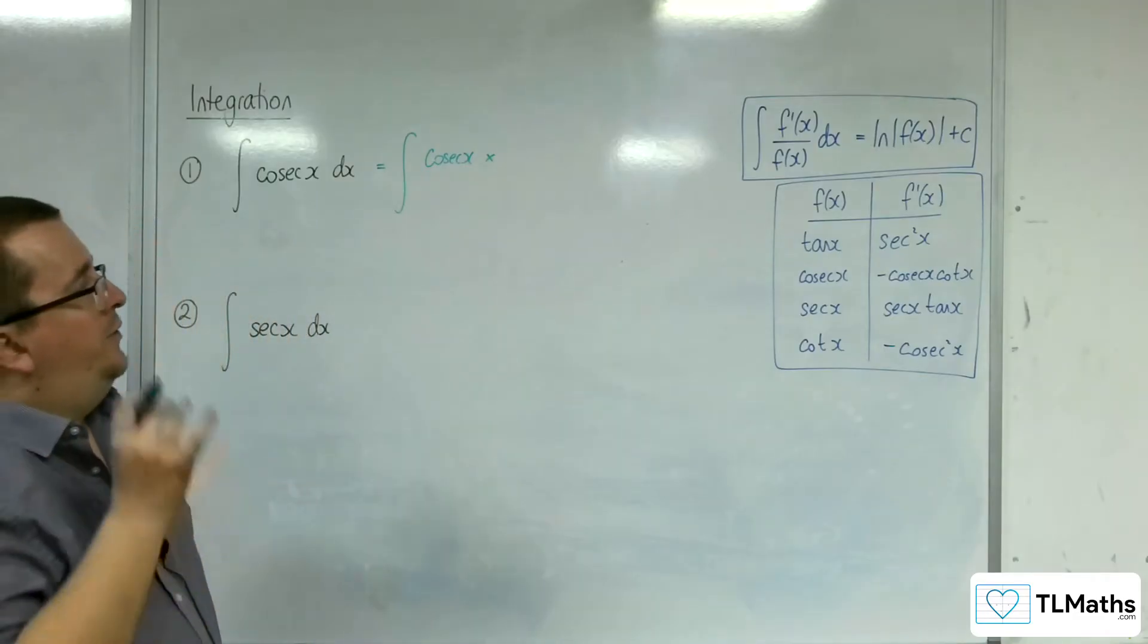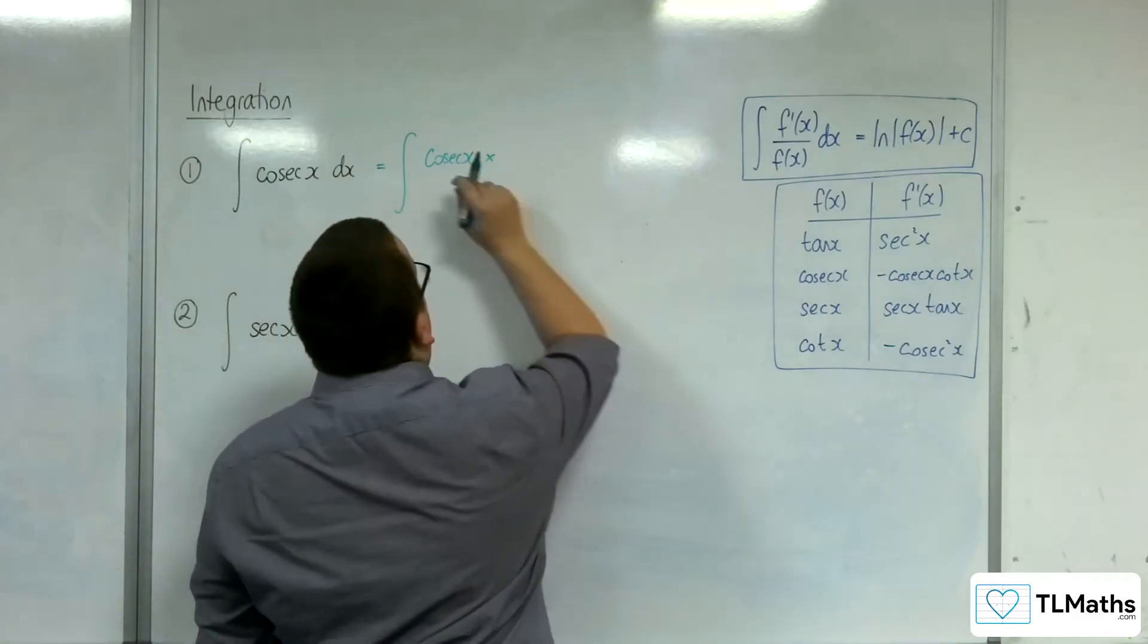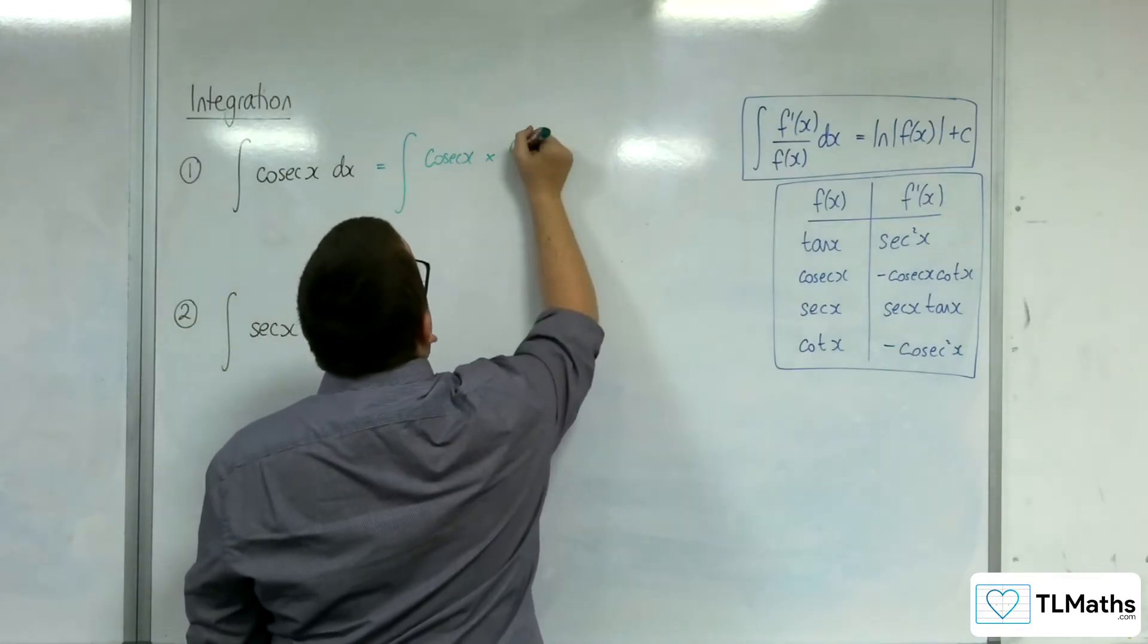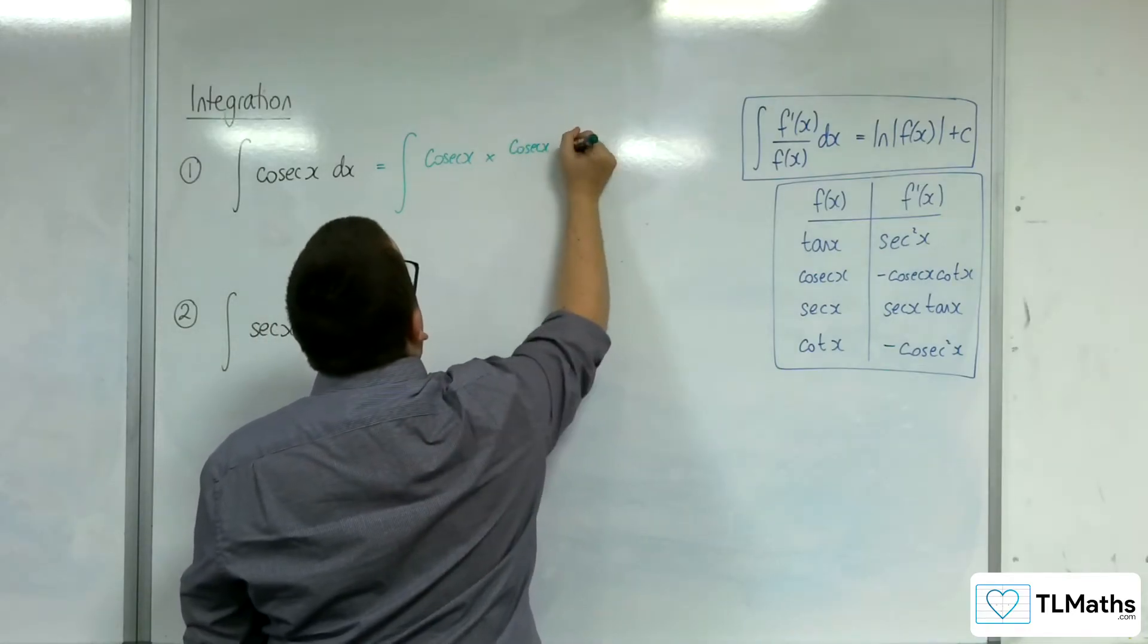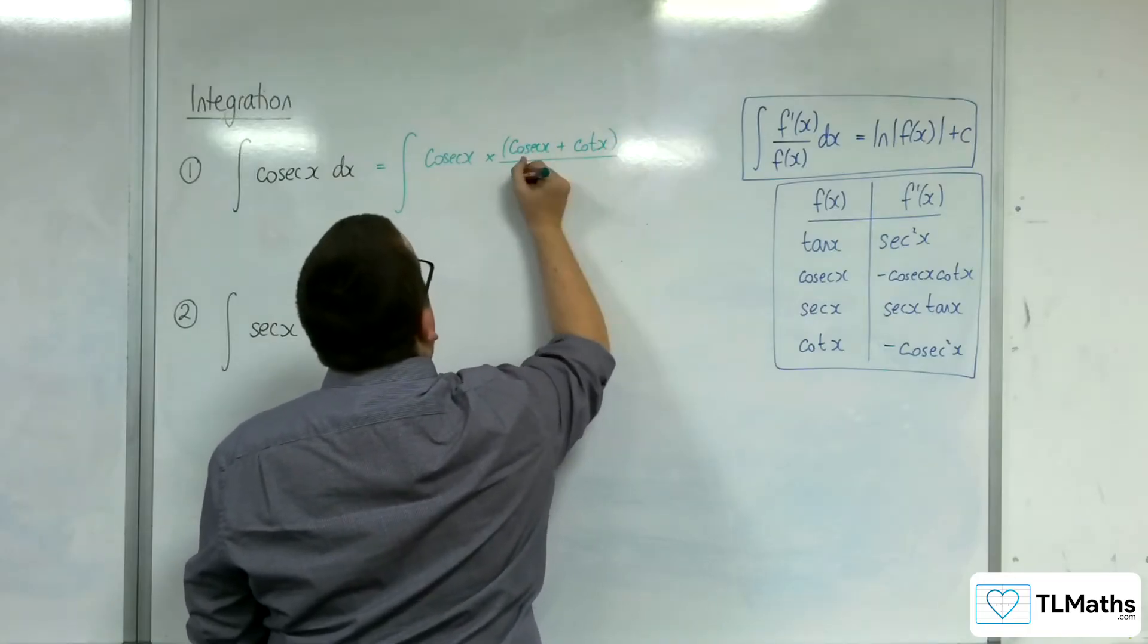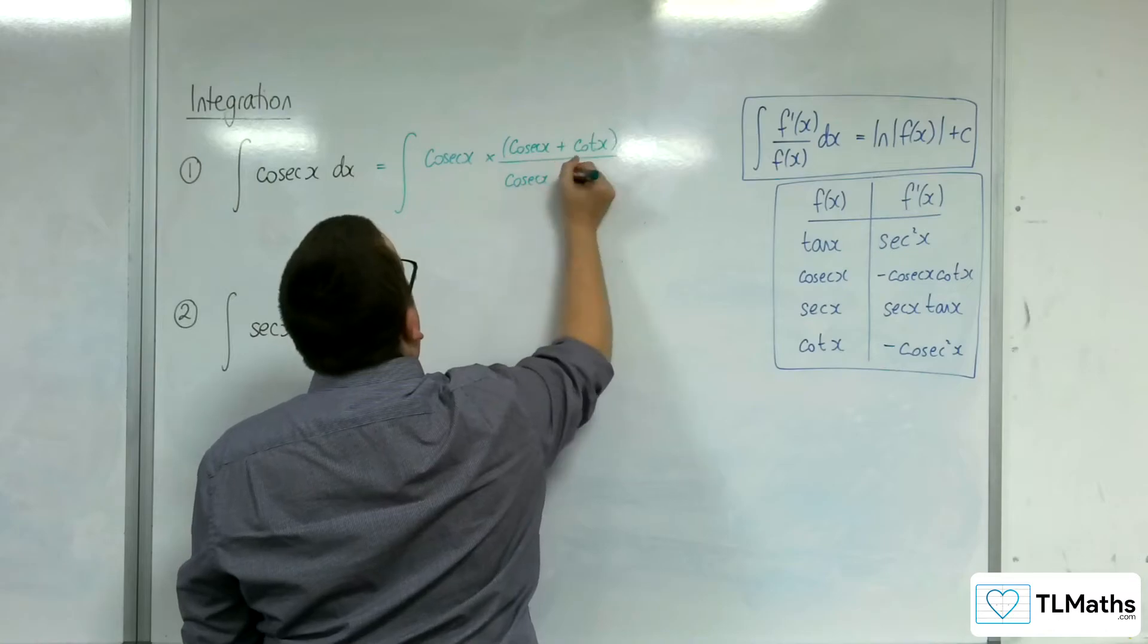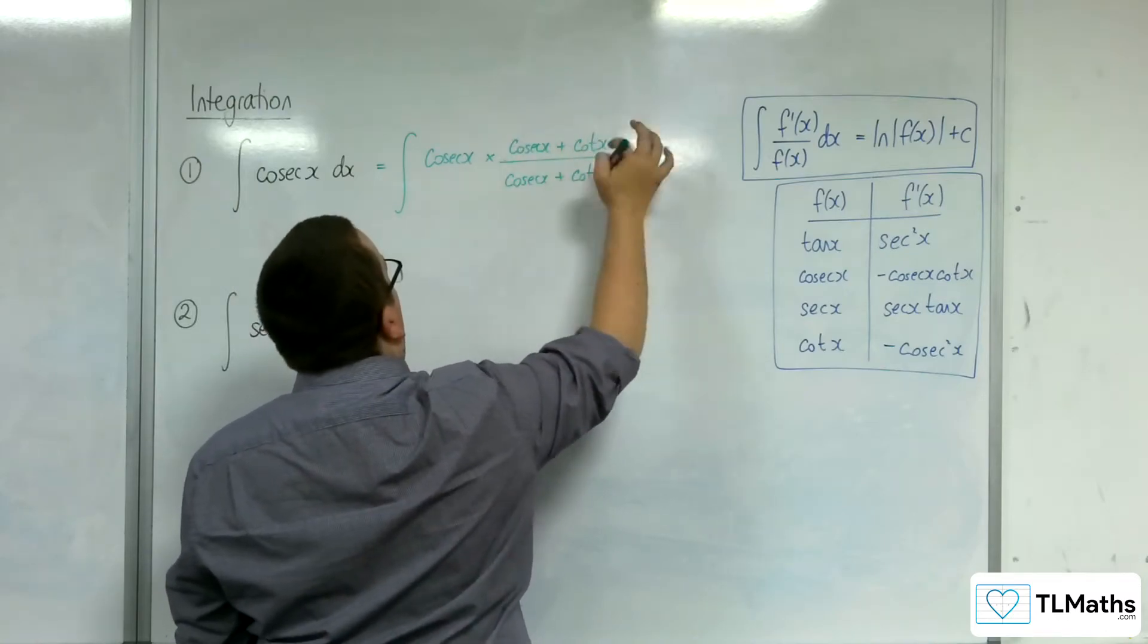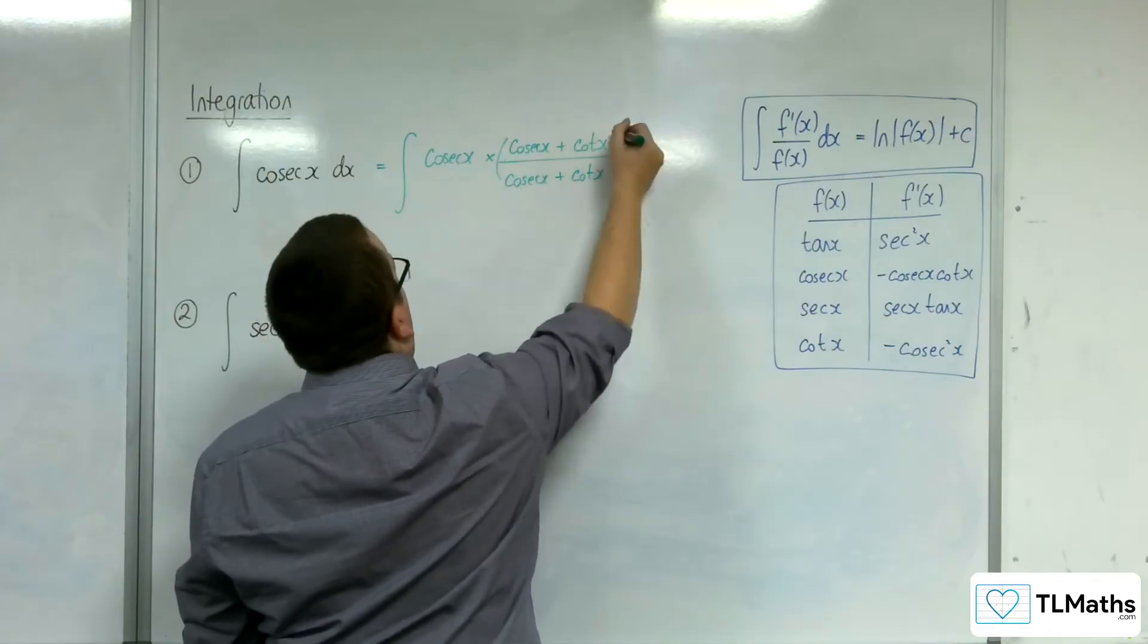So I'm going to multiply this cosec x over one, top and bottom, by cosec plus cot. So that's that over that. So let's pop brackets around it, like that.